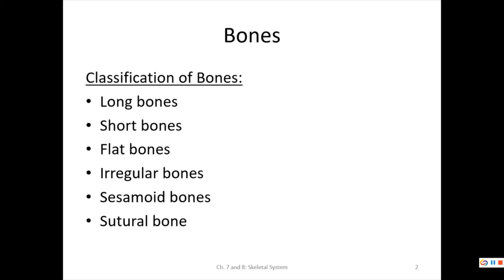We'll start by verbally describing bone classifications, which I test on in lecture but not in lab. There are long bones with a shaft and two wide ends, short bones like wrist or ankle bones, flat bones like the sternum or ribs, irregular bones with no particular shape like vertebrae, sesamoid bones shaped like sesame seeds such as the patella, and sutural bones surrounded by sutures, also called Wormian bones.